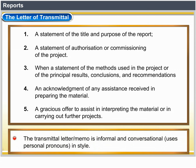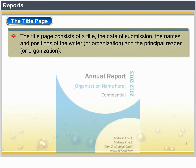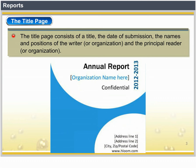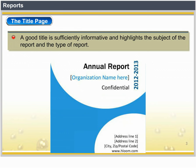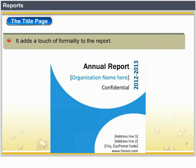The Title Page consists of a title, the date of submission, the names and positions of the writer or organization, and the principal reader or organization. A good title is sufficiently informative and highlights the subject of the report and the type of report. A descriptive title should be used wherever possible. In some organizations, a title page is preceded by a title fly — a plain sheet of paper with only the title on it — which adds a touch of formality to the report.